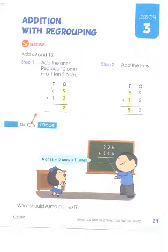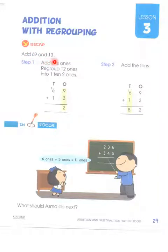Okay children, today we will start the Addition with Regrouping, Lesson 3: Addition with Regrouping. First of all, we will have a recap of what we studied before — we added 69 and 13.